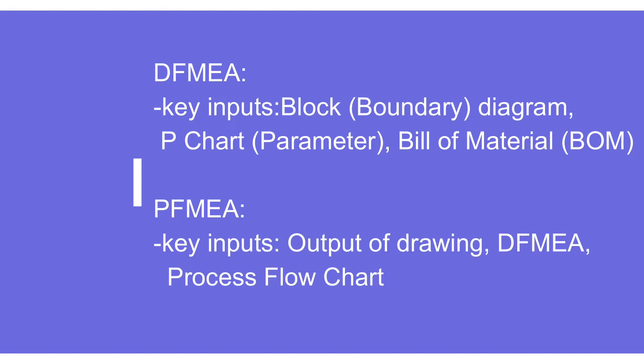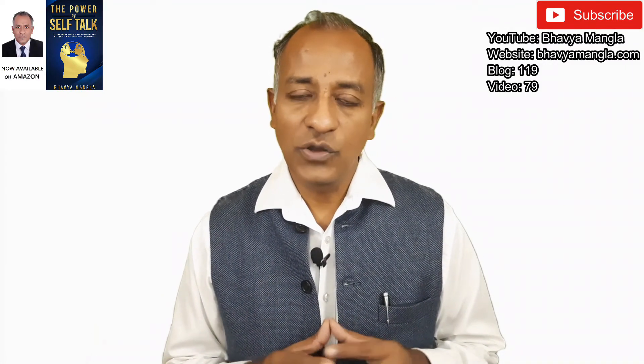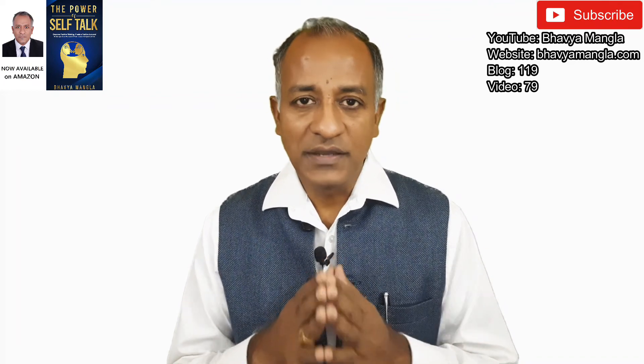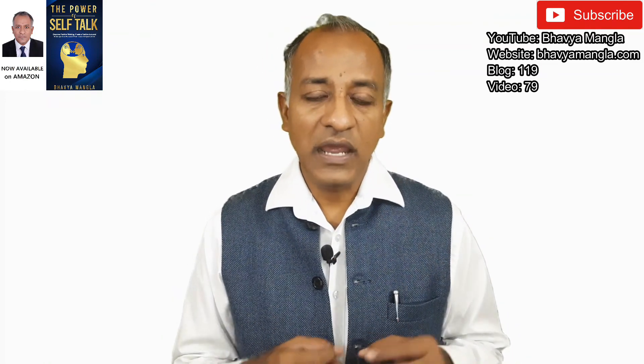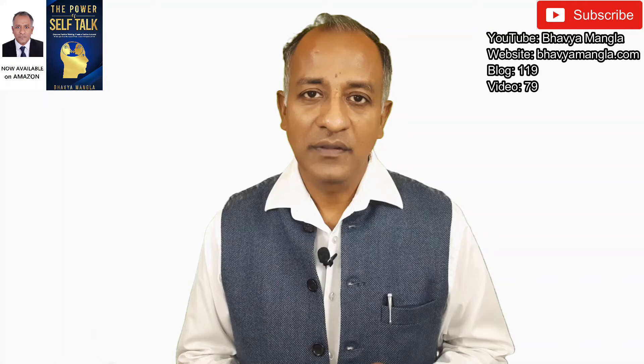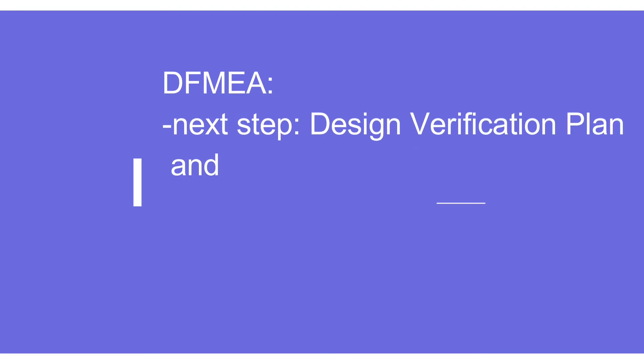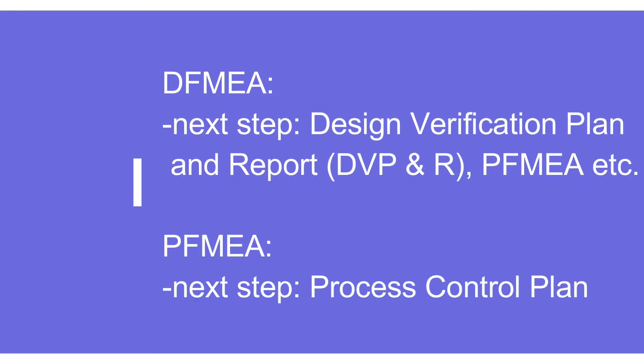Key inputs related to DFMEA include the P-diagram (parameter diagram), block diagram, and bill of materials. Key inputs for Process FMEA include the output of Design FMEA and the process flowchart. Importantly, not all organizations are product-design responsible; in such cases, they receive inputs from the customer and use those to make the Process FMEA. The output of DFMEA feeds into the Design Verification Plan and Report, as well as the PFMEA.